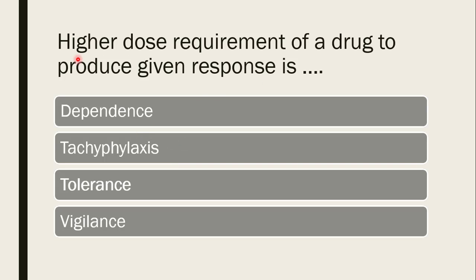Next question: higher dose requirement of a drug to produce a given response — if a drug is supposed to produce a certain response but at therapeutic dose it is not showing the effect and needs a higher dose than normal, that phenomenon is called — dependence, tachyphylaxis, tolerance, or vigilance? The correct answer is tolerance, since the normal therapeutic concentration has been tolerated and a higher dose is now needed.